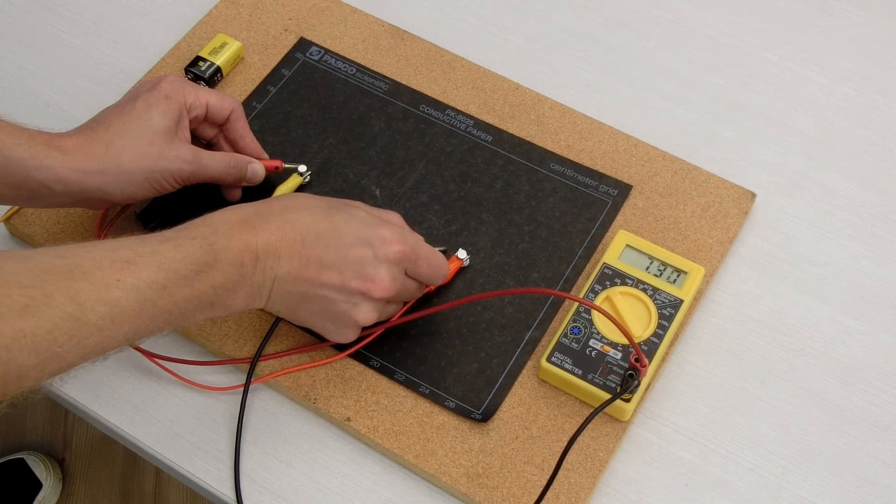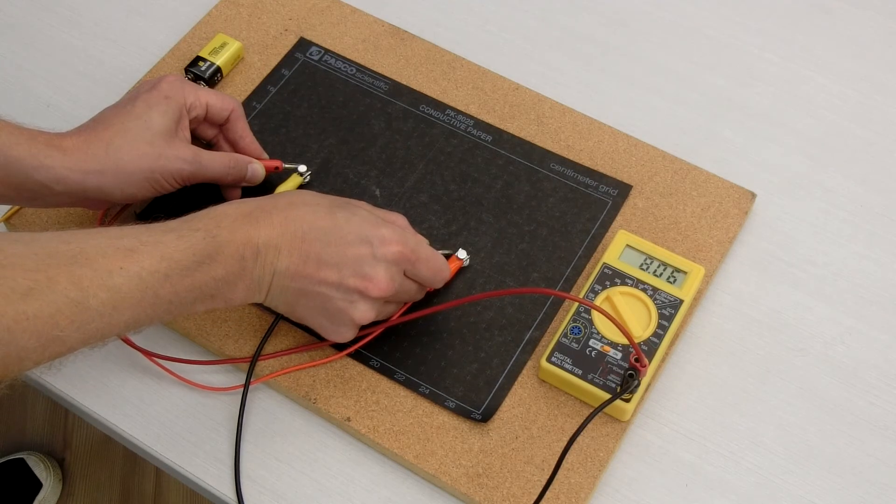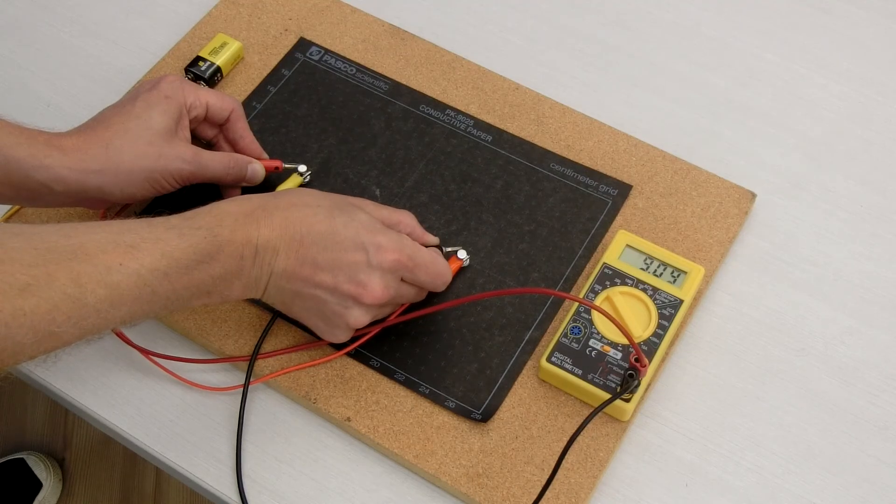Now, you can calculate the approximate electric field at each point by dividing the change in voltage from point to point by the distance between each point.